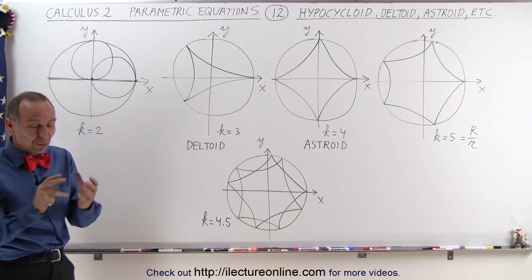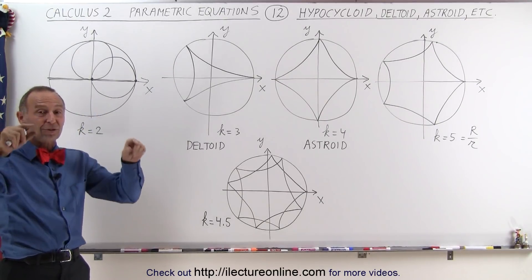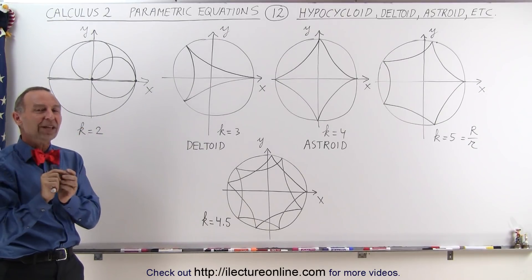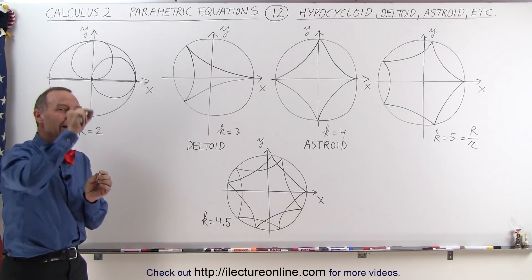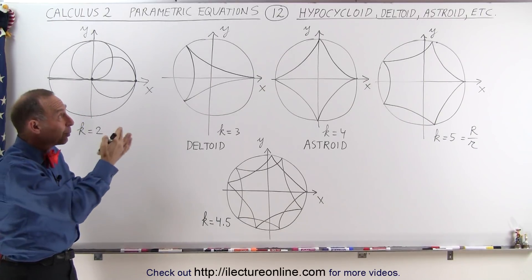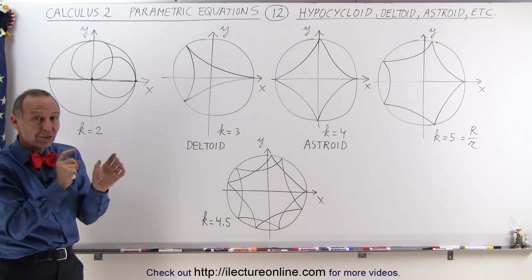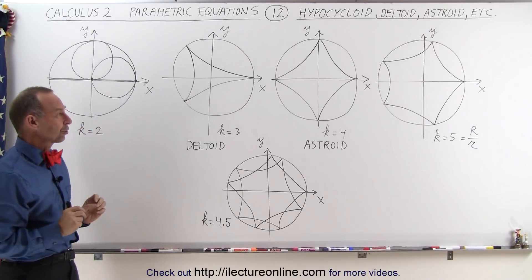One of them called the Spirograph, where we had small little circles with teeth on the outside and big circles with teeth on the inside, and little holes inside the small circles. You put your pencil in those and start twirling them around, and you end up with what we call hypocycloids, different figures depending upon the ratio of the size of the big circle and the size of the small circle.